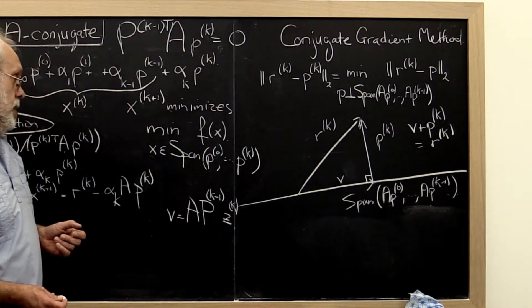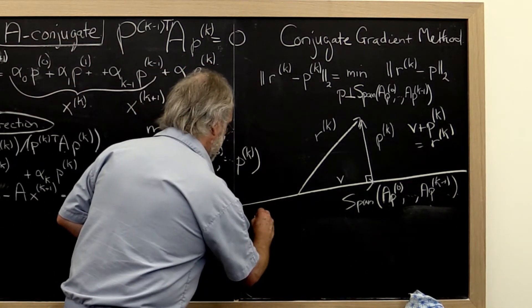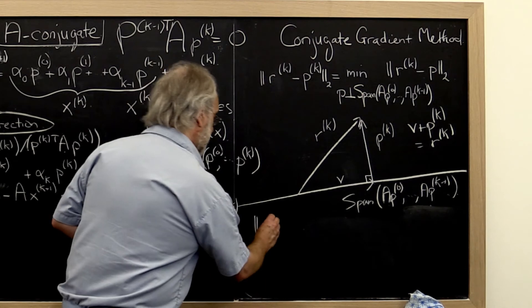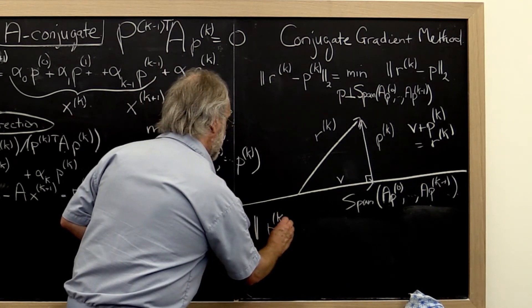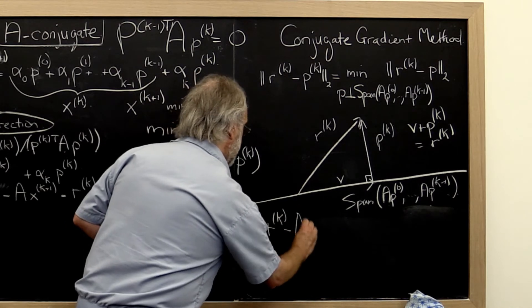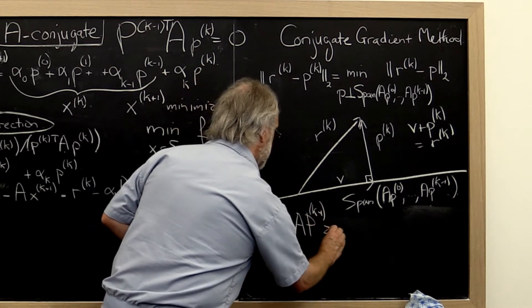Therefore what we really want to do is we want to look at finding the Zk that minimizes the following problem: Rk minus A times Pk minus 1 times the Zk.